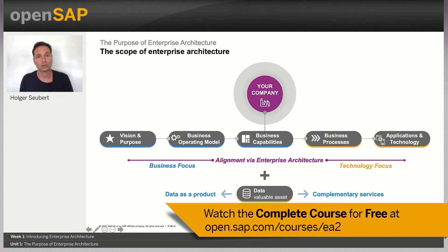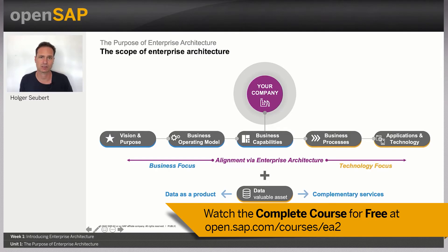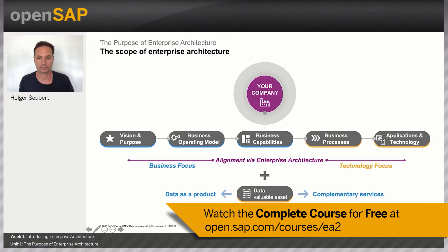You can also use data to include more data points, optimizing existing business processes along your value chain or supporting decision-making along your value chain. This capability of dealing with data is also something which is in scope of enterprise architecture.